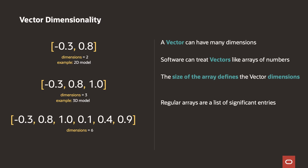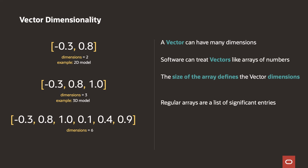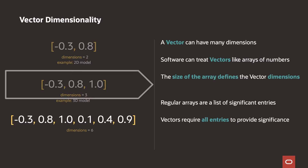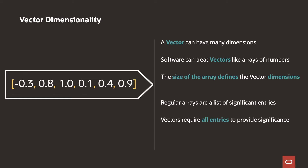However, regular arrays are just a list of common elements — for example, a list of phone numbers where each element is meaningful on its own. For a vector, the elements, called dimensions, represent unique attributes of the object. One dimension can represent the color of the object, another the size, another the shape. But you need the combination of all attributes to represent the overall object. So vectors are very different from arrays, even though they look like them. For a vector you will always need all dimensions.